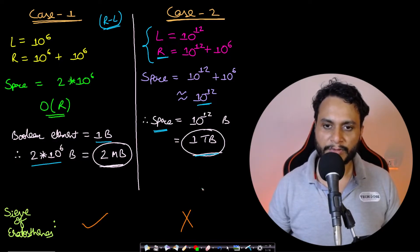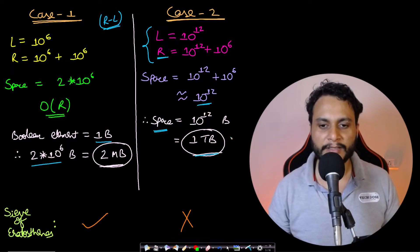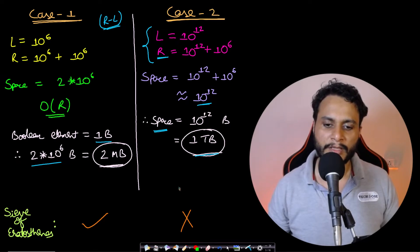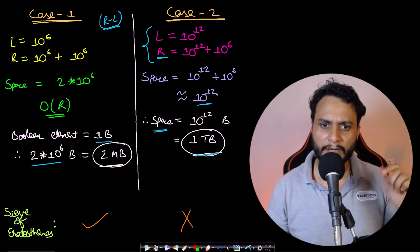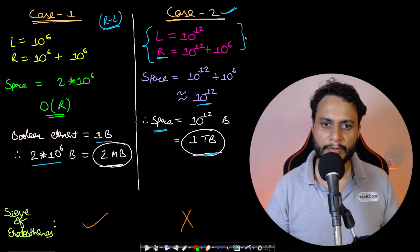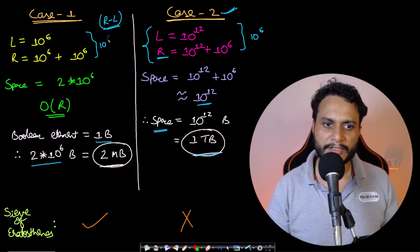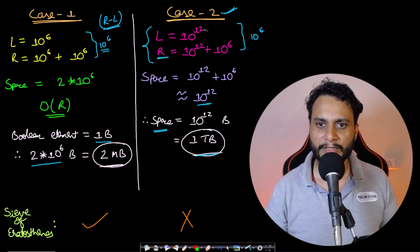Therefore in such situations we need a more space-efficient technique, which is the segmented sieve. The segmented sieve is useful when the range is small but the numbers can be very high. As you can see in case 2, the range R minus L is 10^6, same as case 1, but the numbers themselves are much higher, making the segmented sieve more suitable.